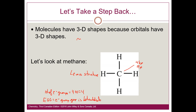Those 4 groups try to get away from each other as much as possible. You can do better than 90 degrees by going into 3 dimensions — you can get to 109 degrees. If there are no lone pairs on the central atom, then the molecular geometry equals the electron group geometry. There aren't any in methane, so both the EGG and the molecular geometry are tetrahedral.